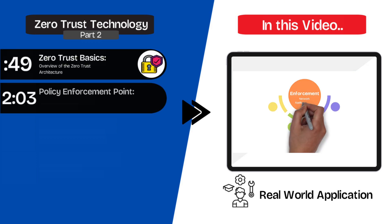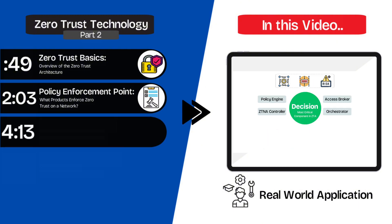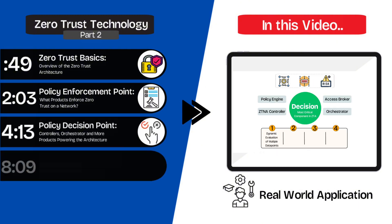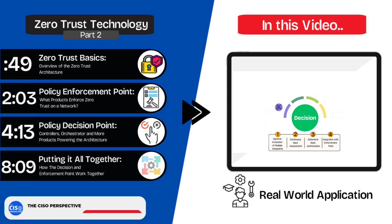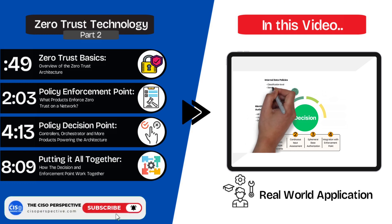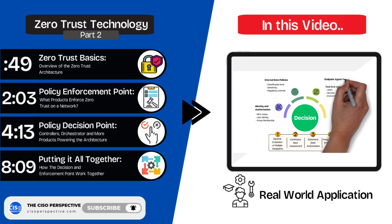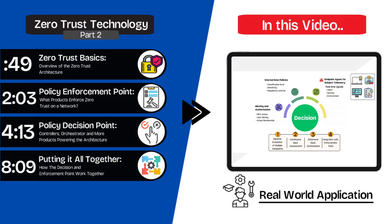We'll map each of the conceptual components, like policy enforcement points and policy engines, to real-world technologies you're probably already familiar with, such as firewalls, identity providers, and endpoint protection platforms. By the end of the video, you should have a solid understanding of the components of the zero trust framework and how they map to real products and technologies.